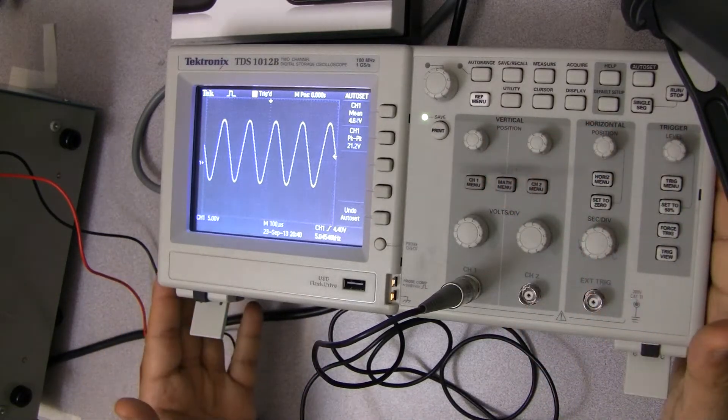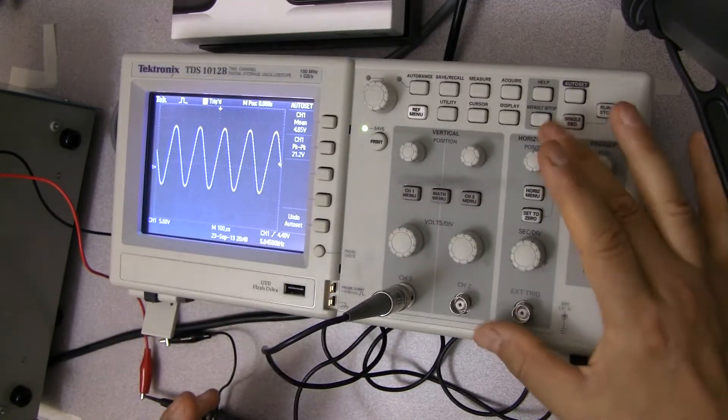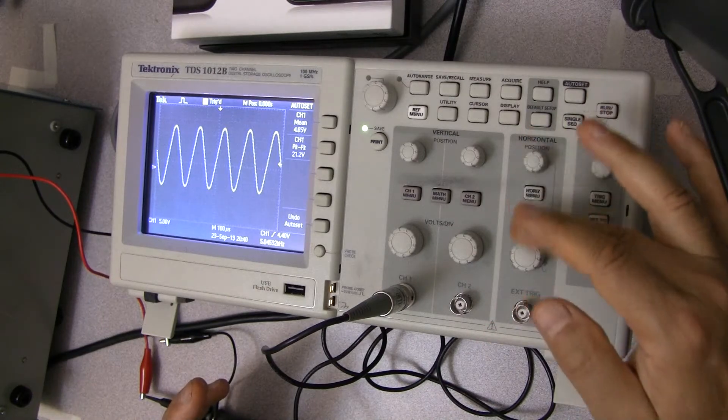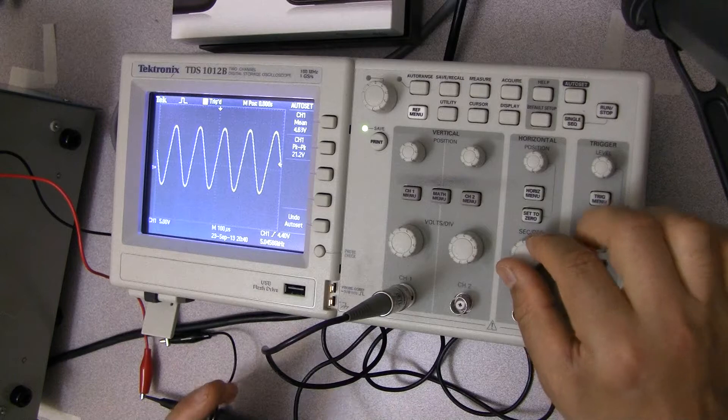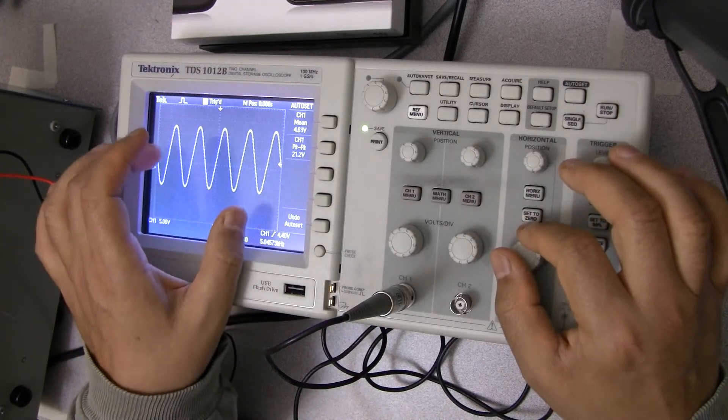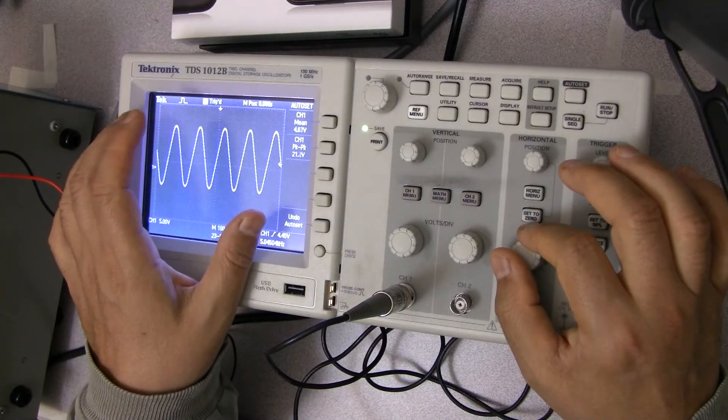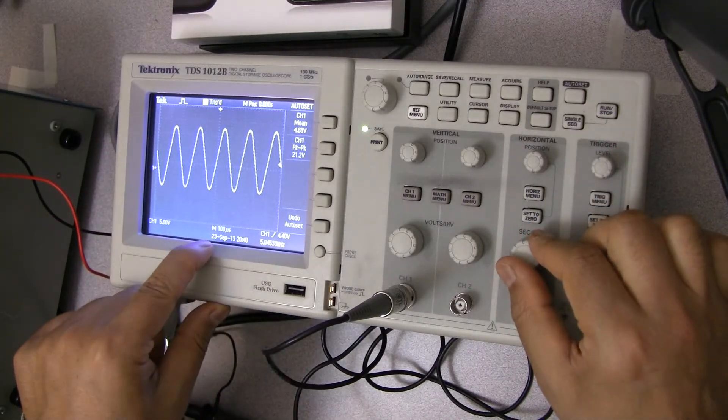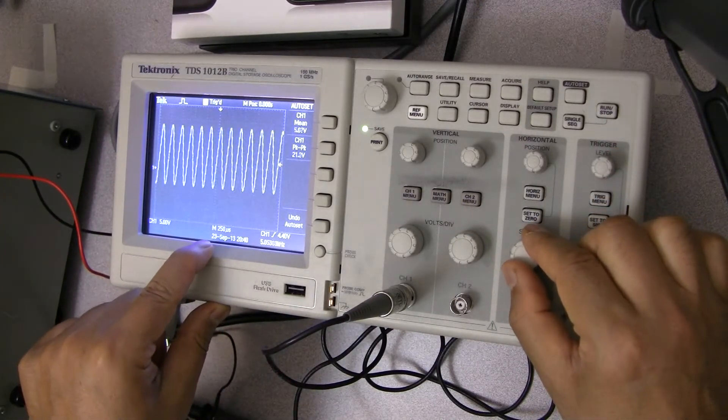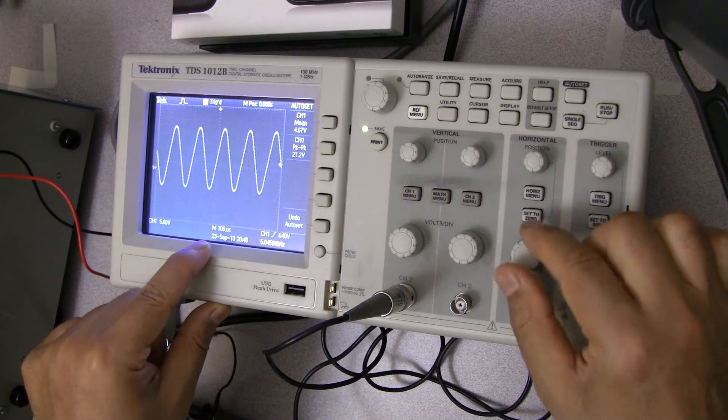Now, of course, this is called the horizontal axis or the time axis. I can play with this. Sometimes I might want to get a more accurate read or look at one period only. So all I have to do is, instead of 100 microseconds per division, maybe I can reduce it to maybe 50, or even less. We're at 25 microseconds per division.